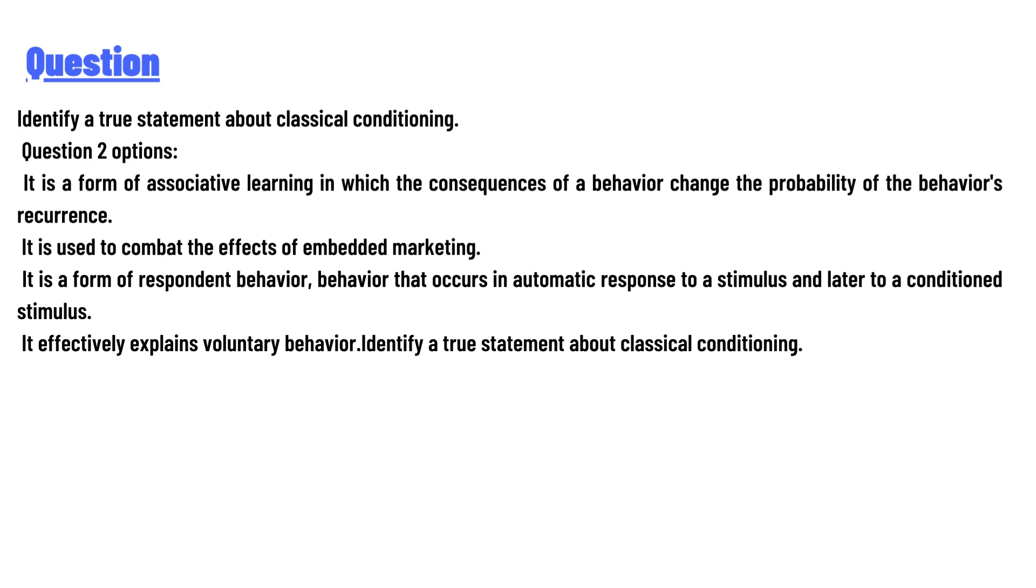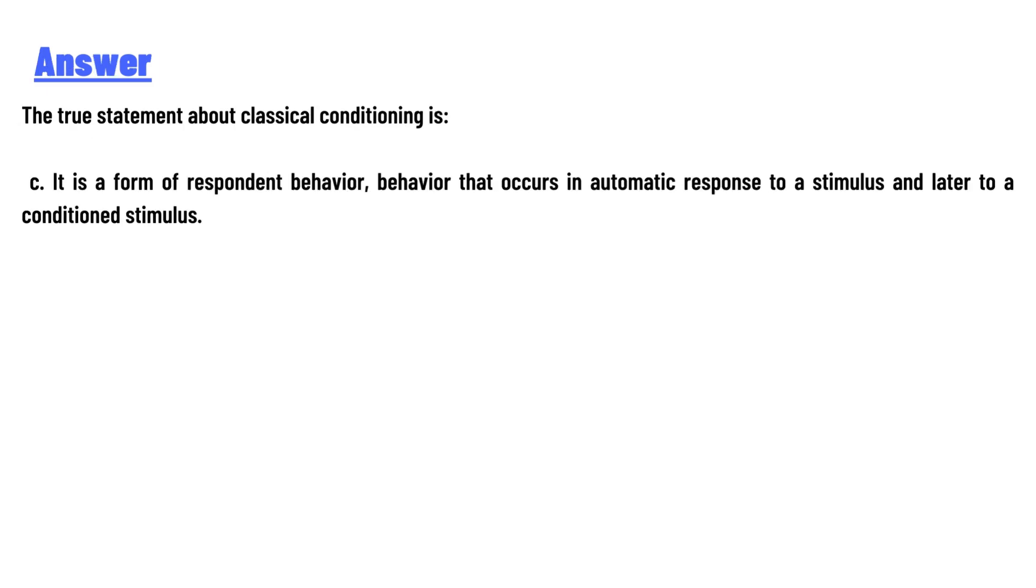Identify a true statement about classical conditioning. And the answer: the true statement about classical conditioning is C. It is a form of respondent behavior, behavior that occurs in automatic response to a stimulus and later to a conditioned stimulus.